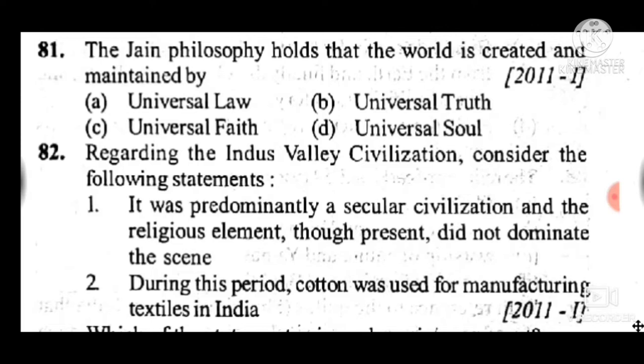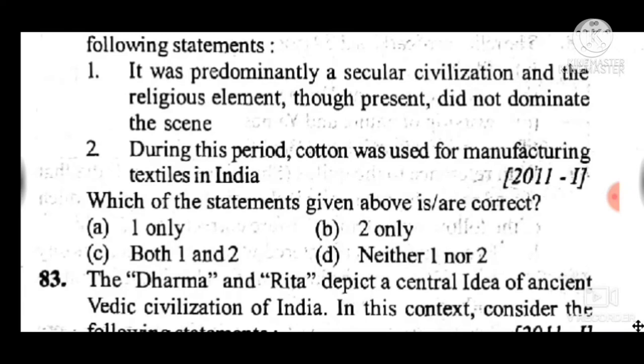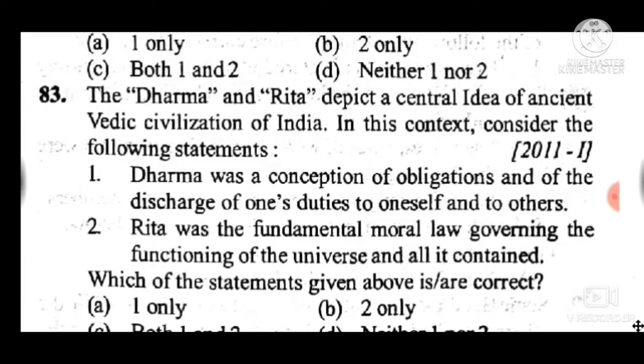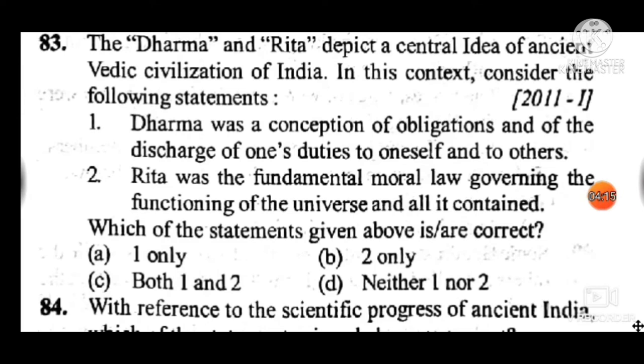Question 82: Regarding the Indus Valley civilization — it was predominantly a secular civilization, and cotton was used for manufacturing textiles in India. Answer is C — both one and two are correct. Question 83: Dharma and Rita depict certain ideas of ancient Vedic civilization. Dharma was a conception of obligations and discharge of duties to oneself and others; Rita was a fundamental moral law governing the functioning of the universe. Answer is C — both are correct.